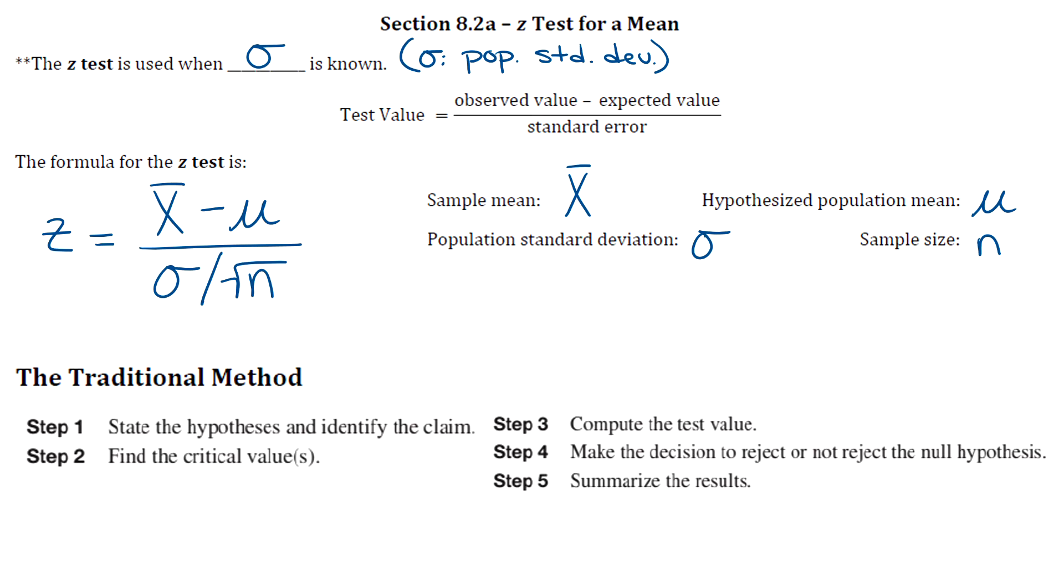There are two methods that are both widely used in the world of statistics for the Z test. We are going to learn both of them, but today we're just going to focus on the traditional method. The traditional method has five steps to it. Let's move on to example one, and I'll go through those steps as we do that example.